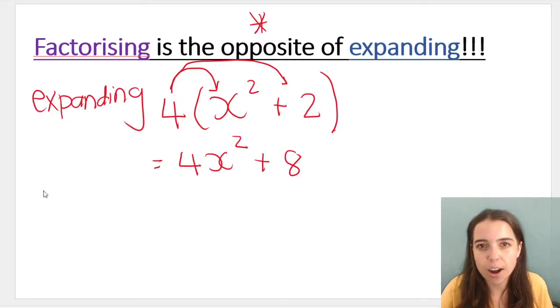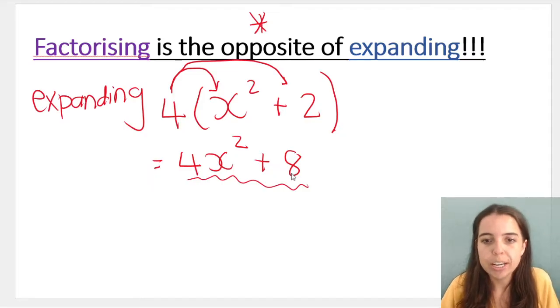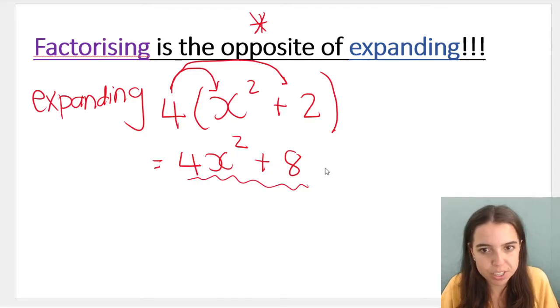If I ask you to factorize this expression that I've got here, 4x squared plus 8, what I'm asking you to do is essentially the opposite of what we just did. I'm asking you to go backwards to the first step.